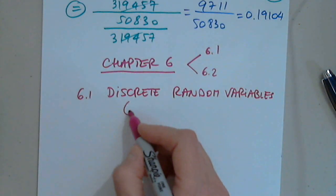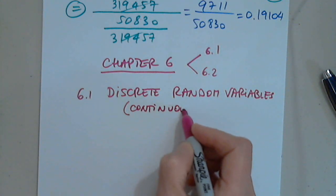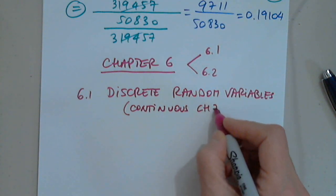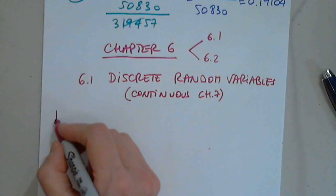versus chapter 7 in which we are going to talk about continuous. But that's chapter 7 after the midterm. So first of all, what is a random variable?